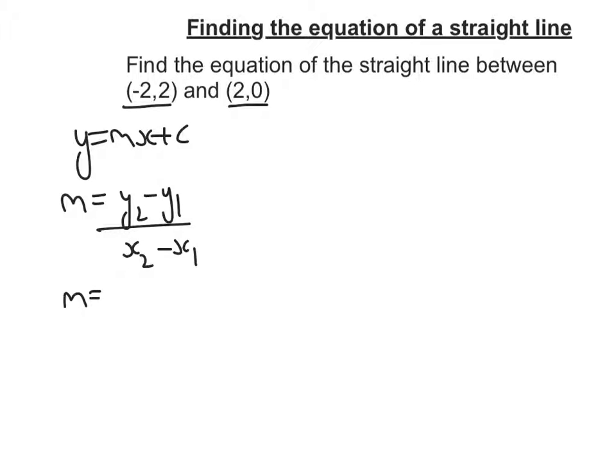Substitute in my points. Well, I've got y2, so in that case this is 0, minus y1, that's 2. We've got x2 is 2, and x1 is negative 2.